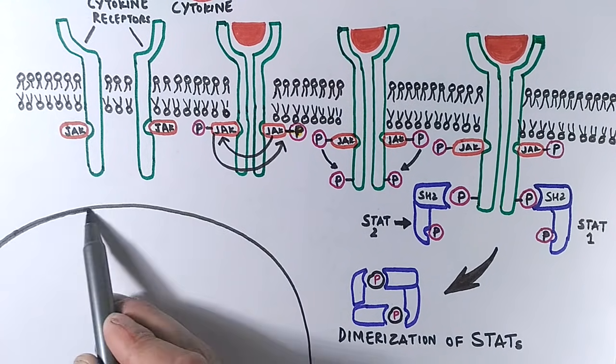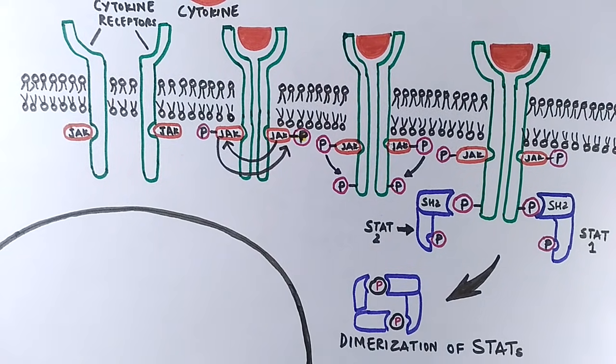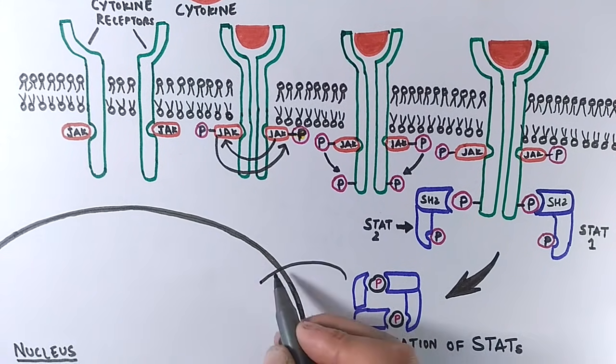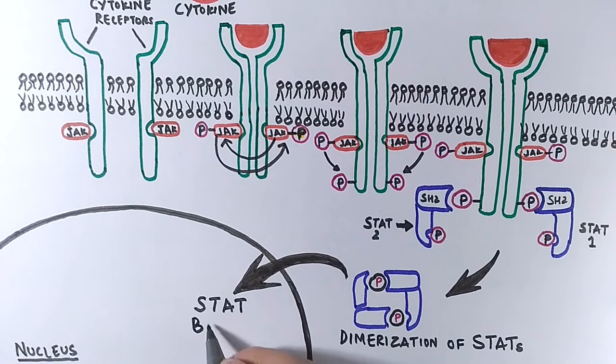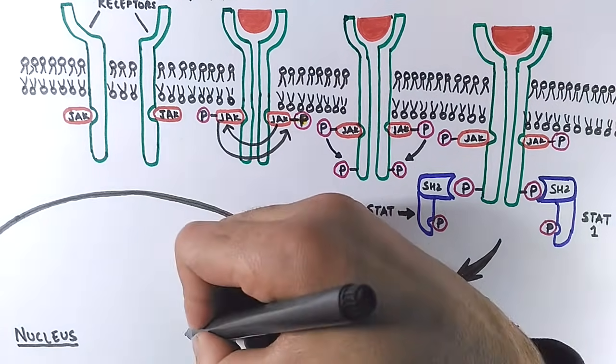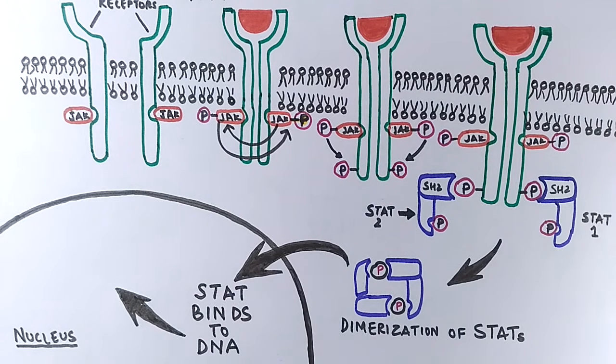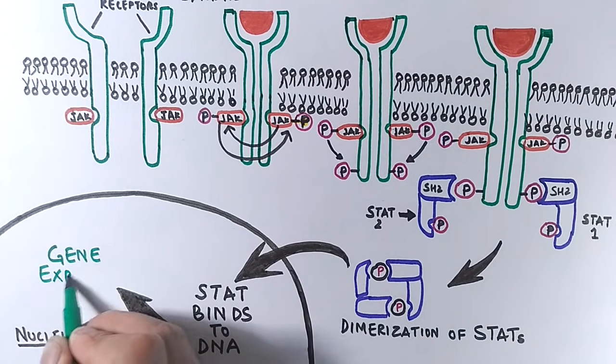So finally we have a STAT dimer, and this dimer translocates to the nucleus. With the help of the DNA binding domain of STAT protein, it attaches itself to the DNA and initiates transcription. And finally we have gene expression.